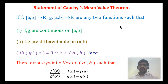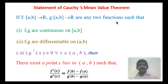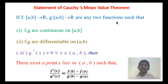That is the statement of Cauchy's mean value theorem. Here we take two functions f and g — both must be continuous and derivable on the interval [a,b], and g'(x) must not equal 0 for any x in open interval (a,b). There exists at least one point c in open interval (a,b) satisfying f'(c) divided by g'(c) equals f(b) minus f(a) divided by g(b) minus g(a).